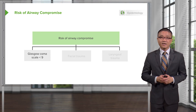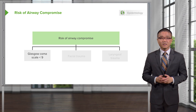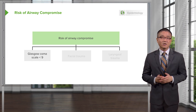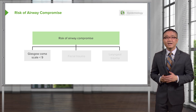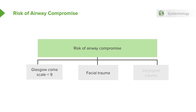What can potentially compromise the airway? A patient who has a Glasgow Coma Scale of less than 9 — which is basically an assessment of the patient's neurological status. Additionally, clear and obvious facial trauma, particularly with active bleeding, may pose a risk for airway compromise. And lastly, direct laryngeal trauma, such as a hanging victim or direct blow to the neck, can cause a compromised airway.